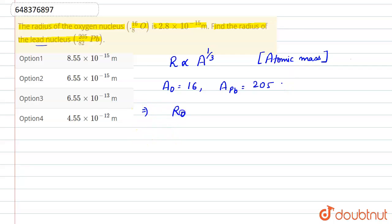So radius of oxygen upon radius of lead is equal to atomic mass of oxygen upon atomic mass of lead, power 1 upon 3.